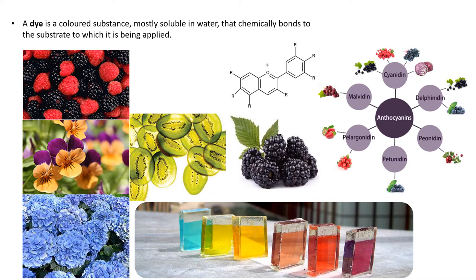A dye is a colored substance which chemically bonds to the surface. The majority of natural dyes are derived from plant sources such as roots, berries, bark, leaves, wood, fungi and lichens. Most of the dyes utilized in the dye-synthesized solar cells are synthetic nowadays. The dyes constitute the main colored compounds in the plants — for example anthocyanins, as shown in the picture. These can be easily isolated from different plant sources or synthesized artificially. The dyes are highly conjugated molecules and show good electron transfer properties.